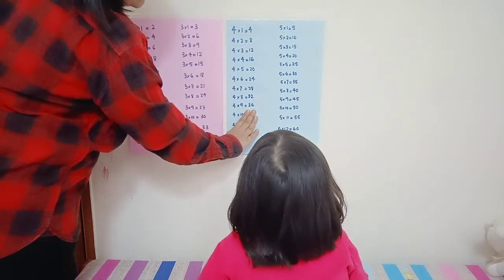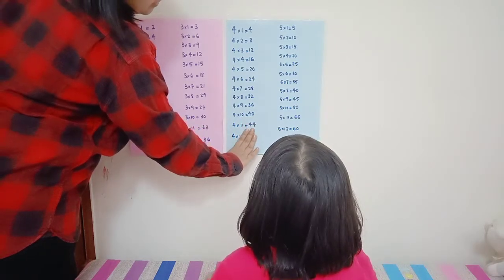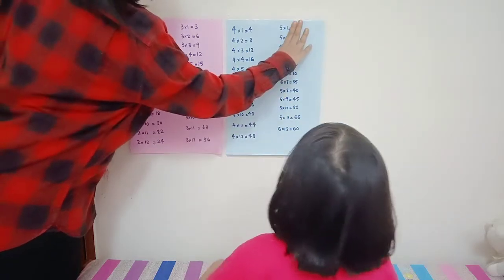thirty-six. Four times ten forty, four times eleven forty-four, four times twelve forty-eight. Five times one five.